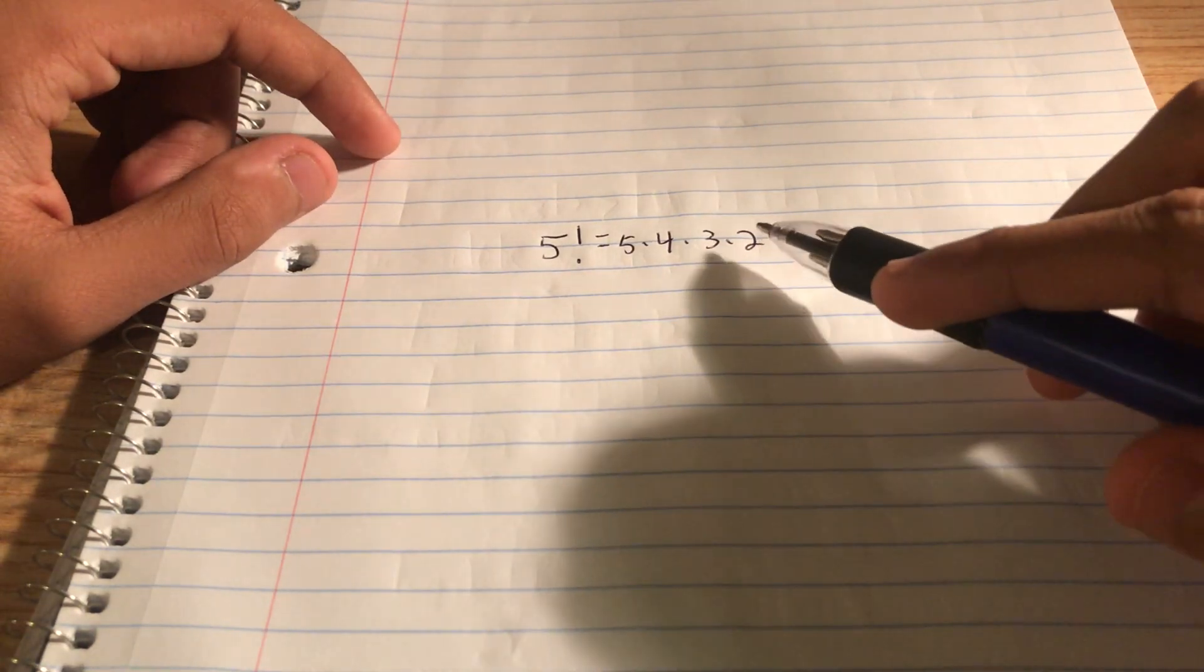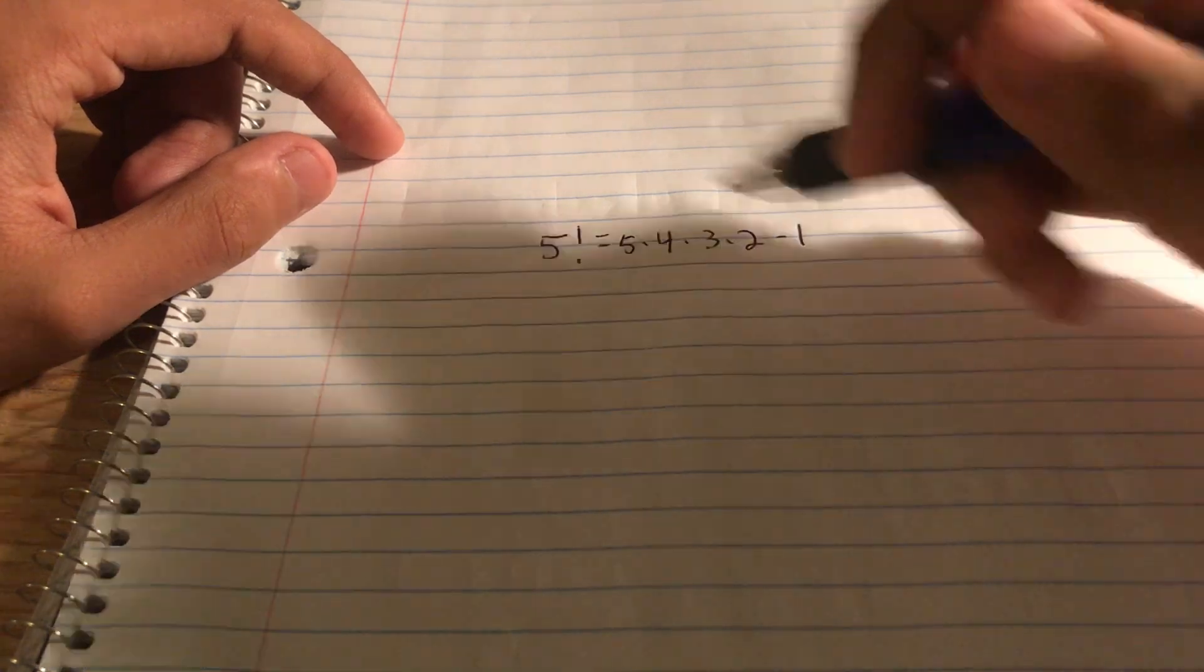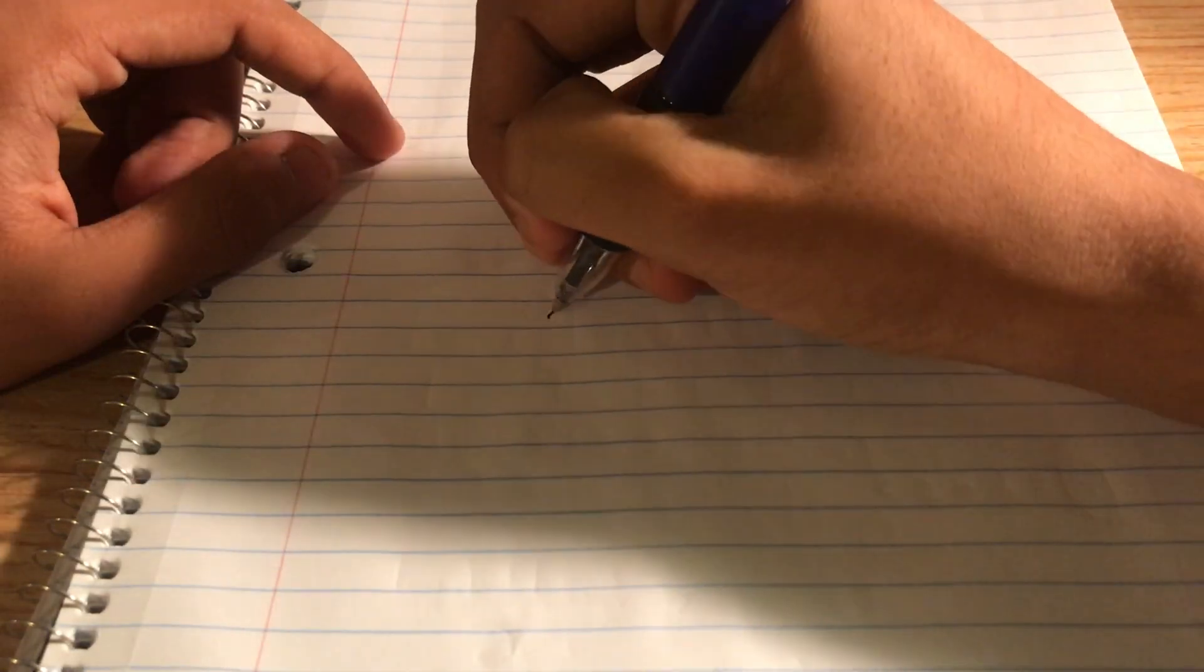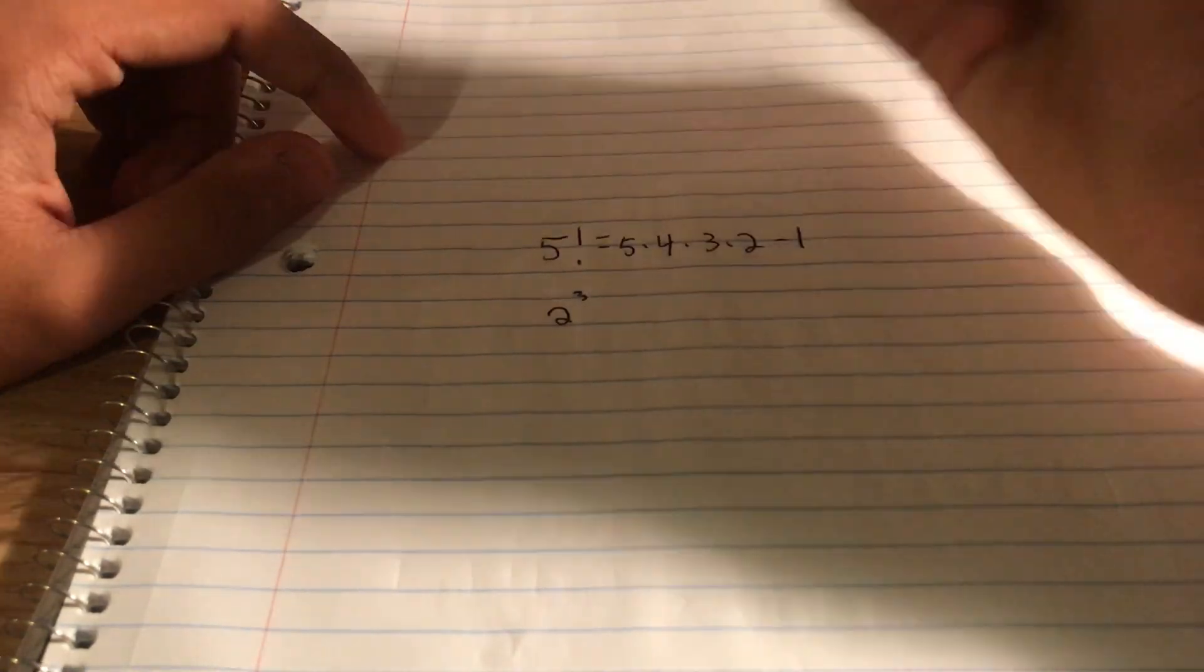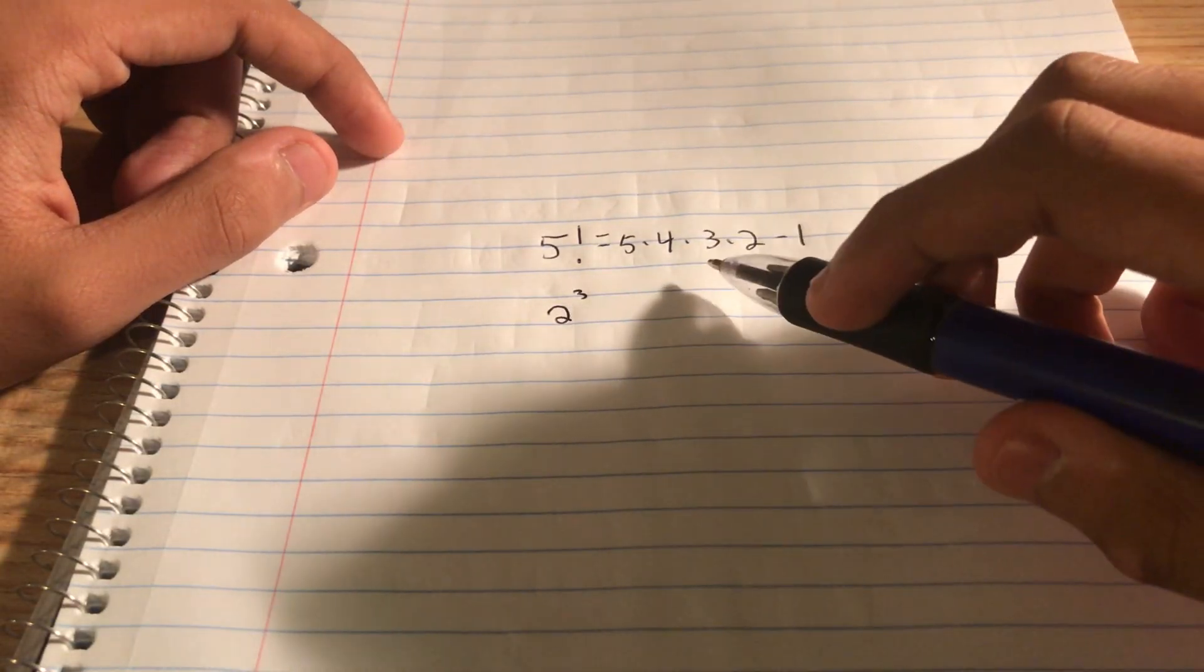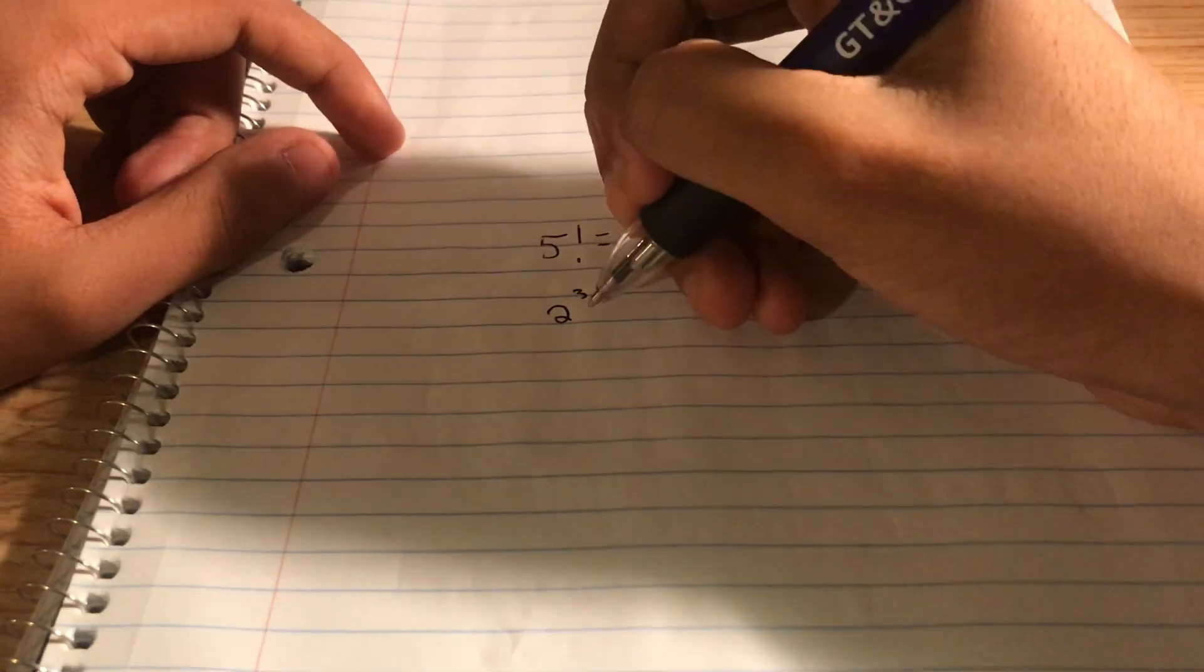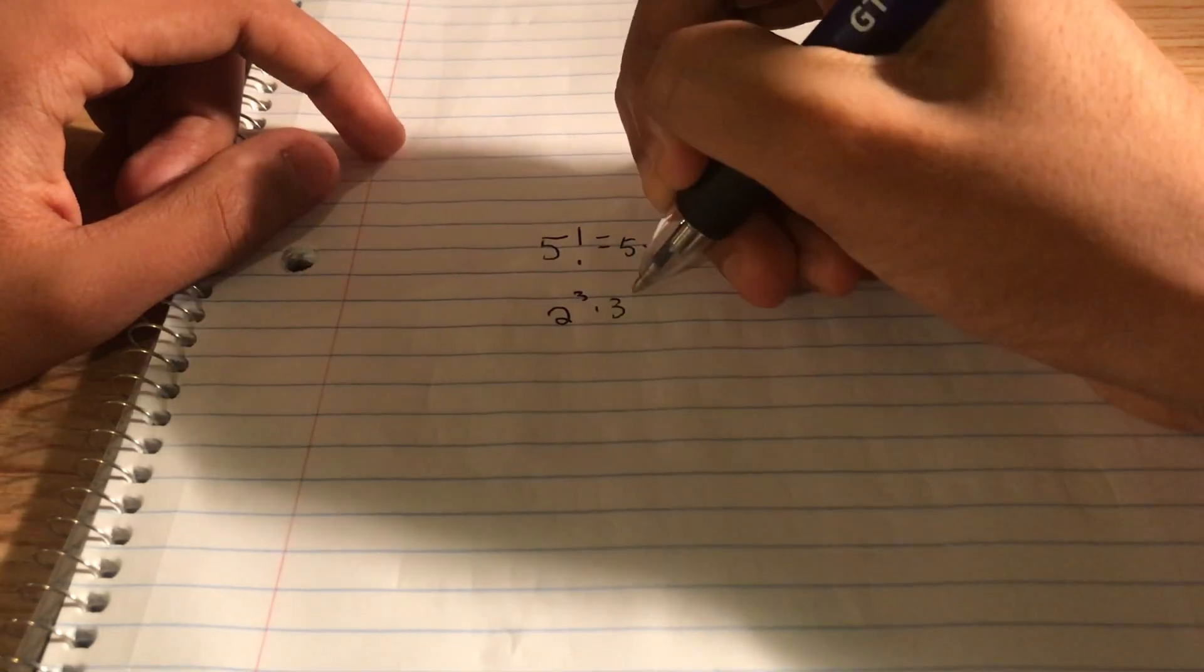Powers of 2. We got 1 power of 2 over here and 2 powers of 2 over here because 4 is 2 squared. So 5 factorial consists of a 2 to the power of 3. And now let's see, powers of 3. We got a 3 over here, but we don't have a 3 anywhere else. So there's only 1 three, 3 to the power of 1.